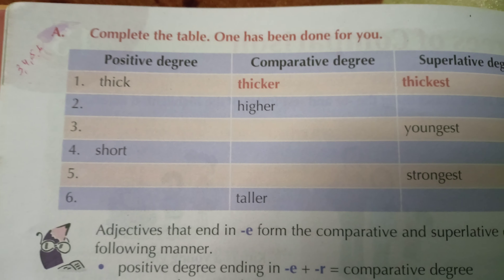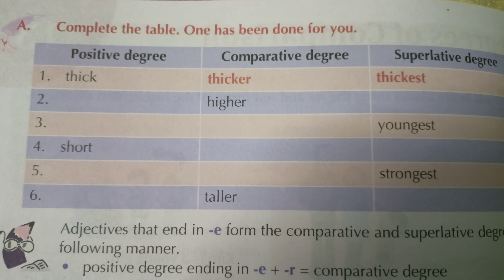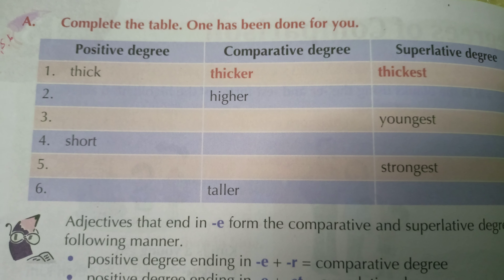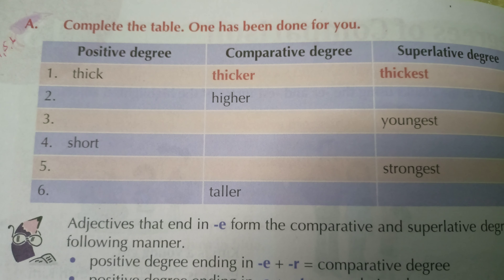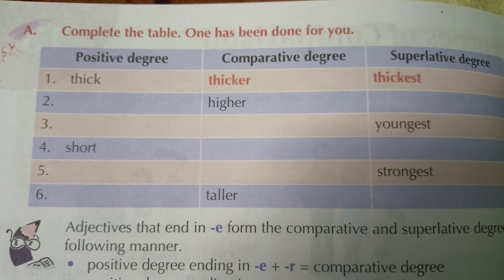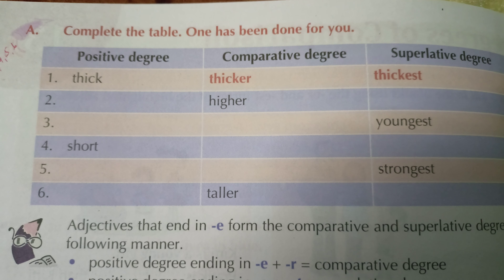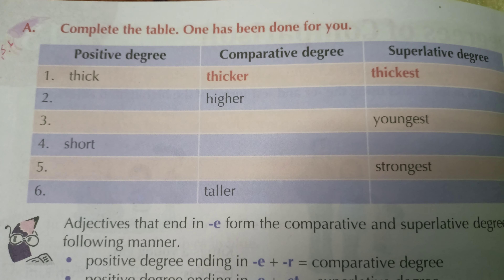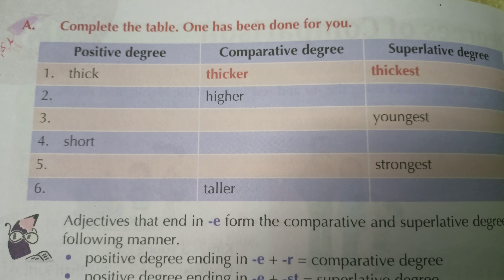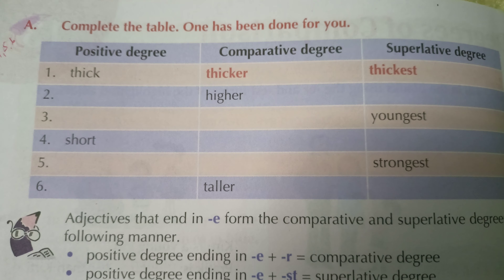There are three degrees of comparison: positive degree, comparative degree, and superlative degree. In positive degree, there is no comparison. In comparative degree, there is comparison between two. And in superlative degree, there is comparison between more than two nouns.